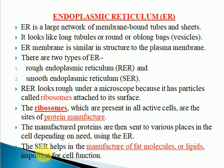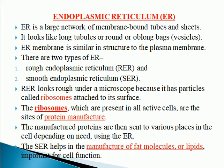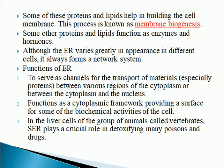Ribosomes are called the protein factory because the manufacture of proteins takes place on their surface. The SER helps in the manufacture of fat molecules or lipids which are important for cell function. Some of the proteins and lipids help in building the membrane, and this process is called membrane biogenesis. Some of the proteins produced in the endoplasmic reticulum help in building the cell membrane or plasma membrane.